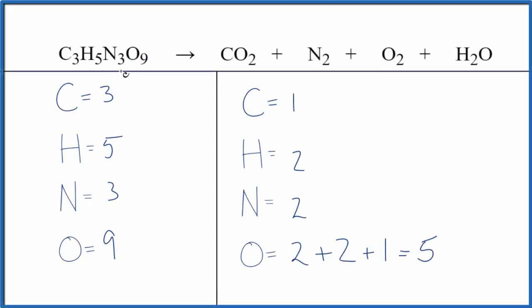Let's balance the equation for the decomposition of C3H5N3O9. We get carbon dioxide gas, nitrogen gas, oxygen gas, and water. That'd be a gas too. This would be hot. This is going to be an exothermic reaction.